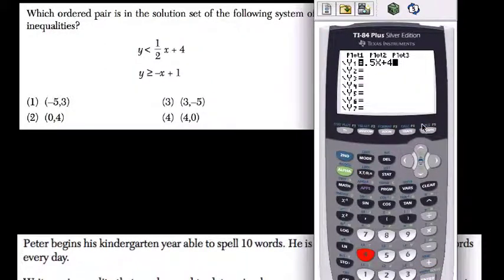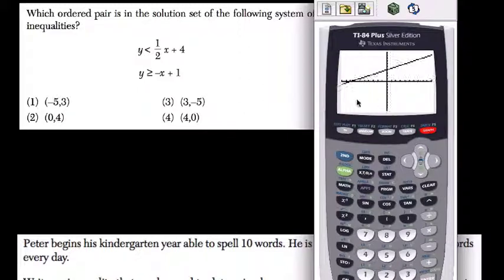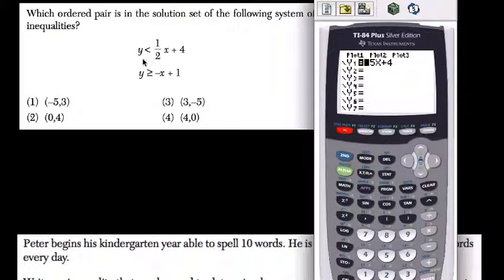But this is y equals 0.5x plus 4, you can see it here on the graph. But we don't want that, we want y is less than that. So when y is equal to 0.5x plus 4, that makes the line. But when it's less than 0.5x plus 4, it's everything shaded below the line.